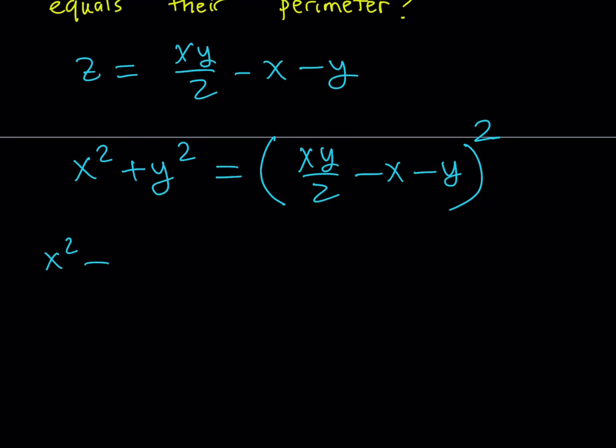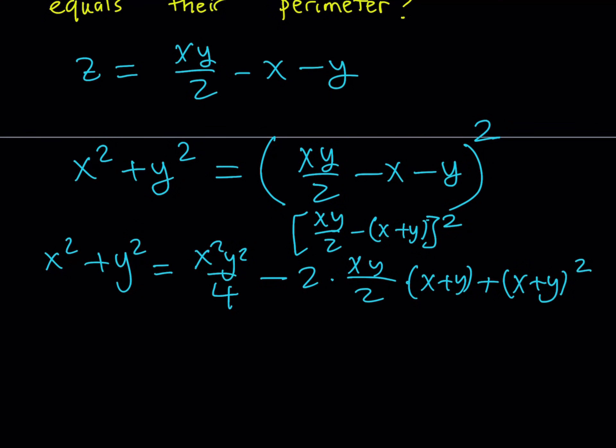Let's go ahead and square this. And when I'm squaring this, allow me to write it this way, so that I can square like a difference a minus b. Okay. So it's going to look like: square of first term minus two times the first times the second, which is x plus y, plus x plus y quantity squared.